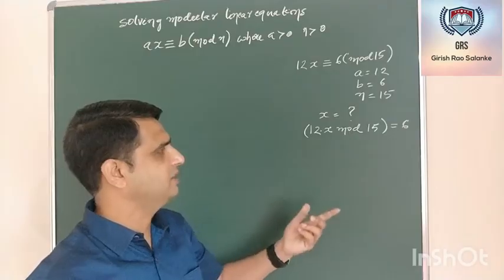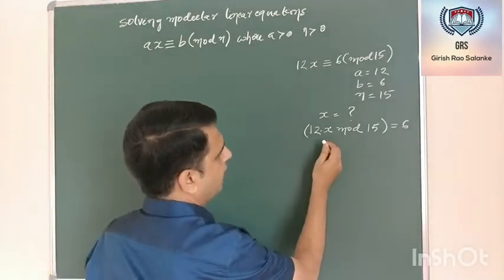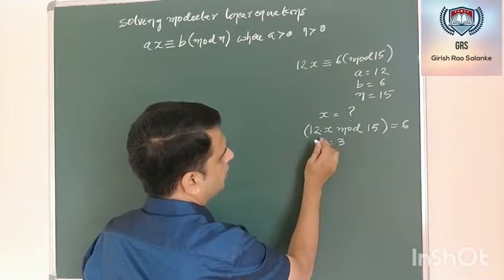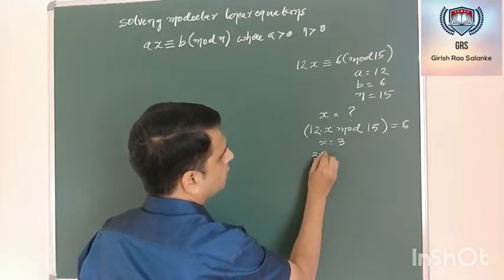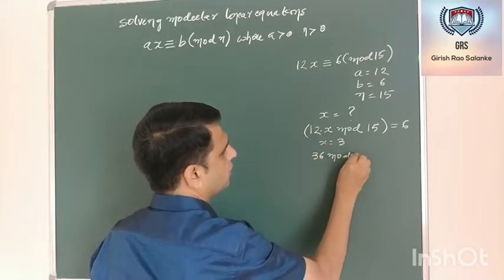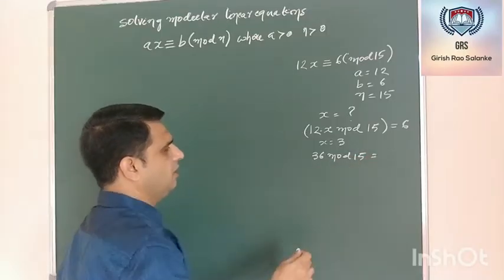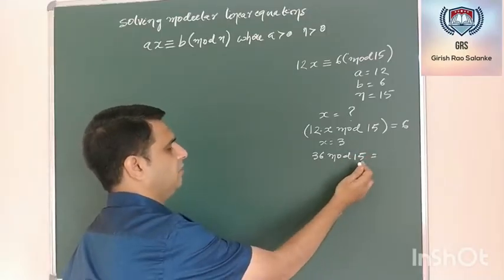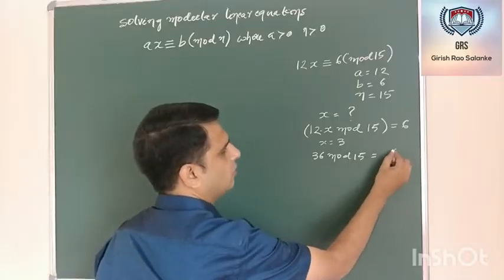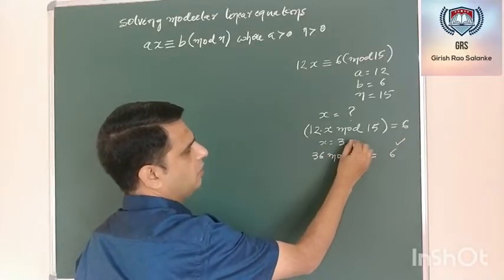One such value is X equal to 3. What is 12 into 3? 12 into 3 is 36, so 36 mod 15. What is 36 mod 15? 36 divided by 15 is 2, remainder is 6. So one such value is X equal to 3.